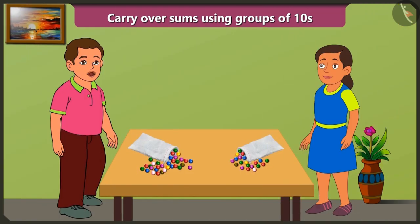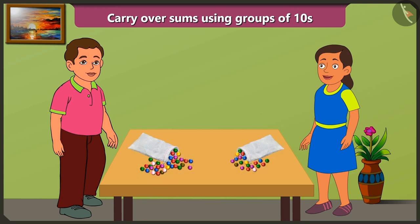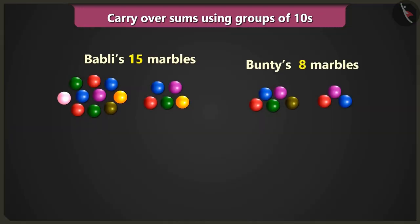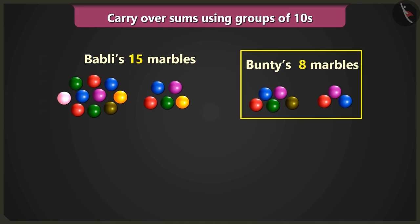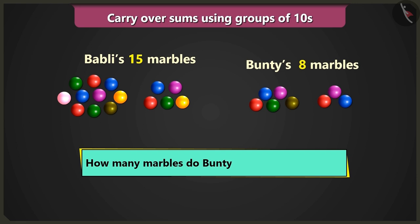Bubbly, we had great fun playing in the garden with marbles today. We won so many marbles, isn't it? Yes brother, we had great fun. When we went out to play, I had 15 marbles with me and you had 8 marbles. So how many marbles did we have earlier?